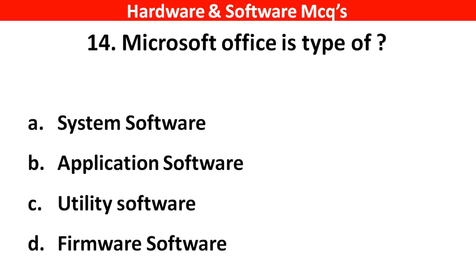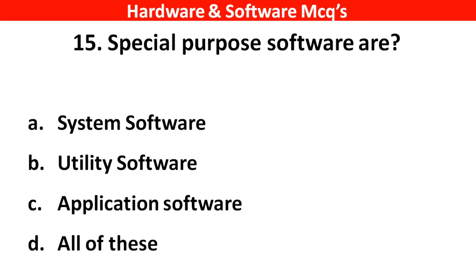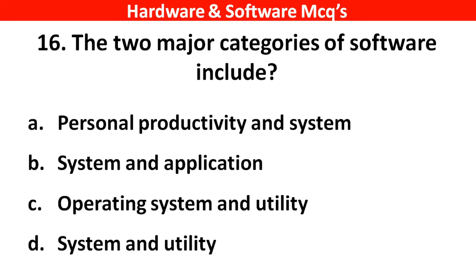Next question: Microsoft Office is a type of ___. The right answer is option B — application software. Next question: Special purpose softwares are ___. The right answer is option C — application software. Next question: The two major categories of software include — the right answer is option C — operating systems and utility.